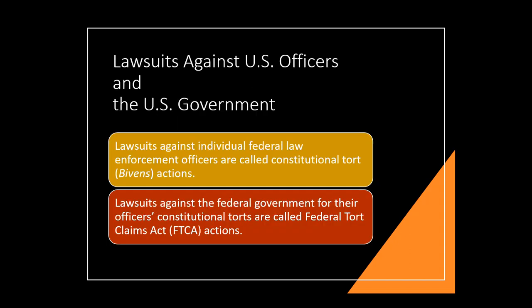For lawsuits against U.S. federal officers and the federal government, we're talking about Bivens Actions — the constitutional tort. Lawsuits against the federal government for an officer of it have to be brought under the Federal Torts Claim Act. Generally, you can't sue the government; you can only sue the government when they pass a specific law that says you can sue them, and here is how. This is because of something called sovereign immunity.